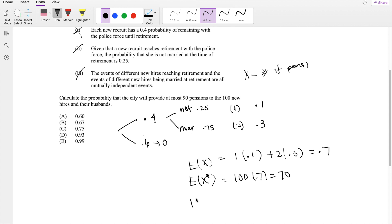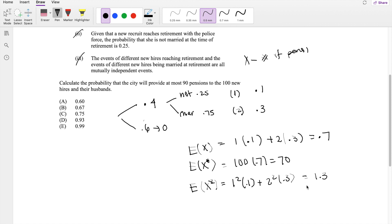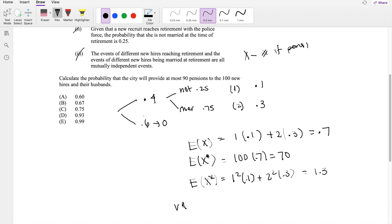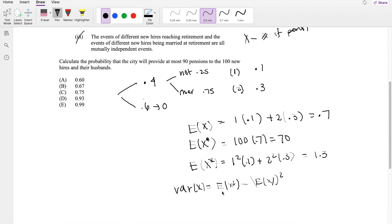We need to find the variance. We also have to find the second moment. The second moment equals 1 squared times 0.1 plus 2 squared times 0.3, which equals 1.3. The variance formula is the second moment minus the first moment squared. So this equals 1.3 minus 0.7 squared, which equals 0.81.